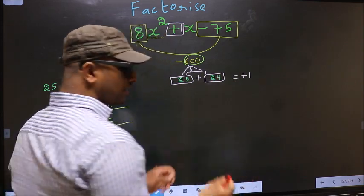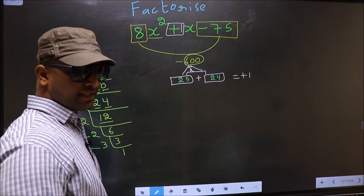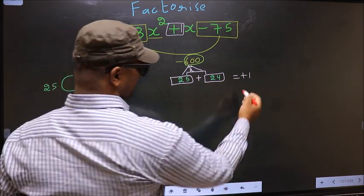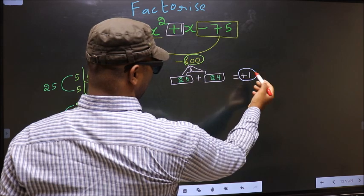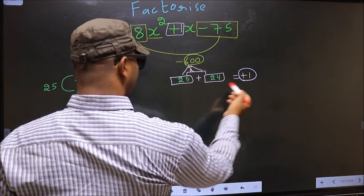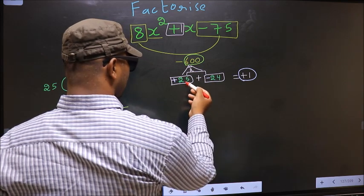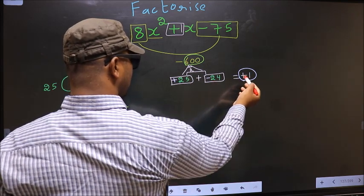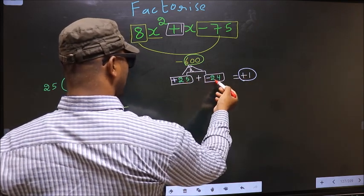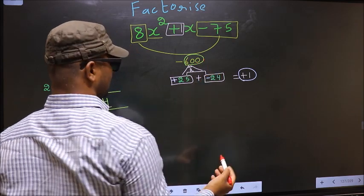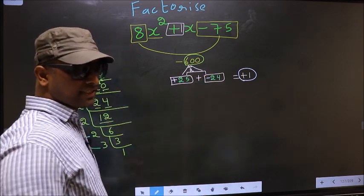Now we should adjust the signs. What I mean is over here we have plus 1. To get plus 1 we should put plus here and minus here. Plus 25 minus 24 is plus 1, plus 25 into minus 24 is minus 600. So we have adjusted the signs.